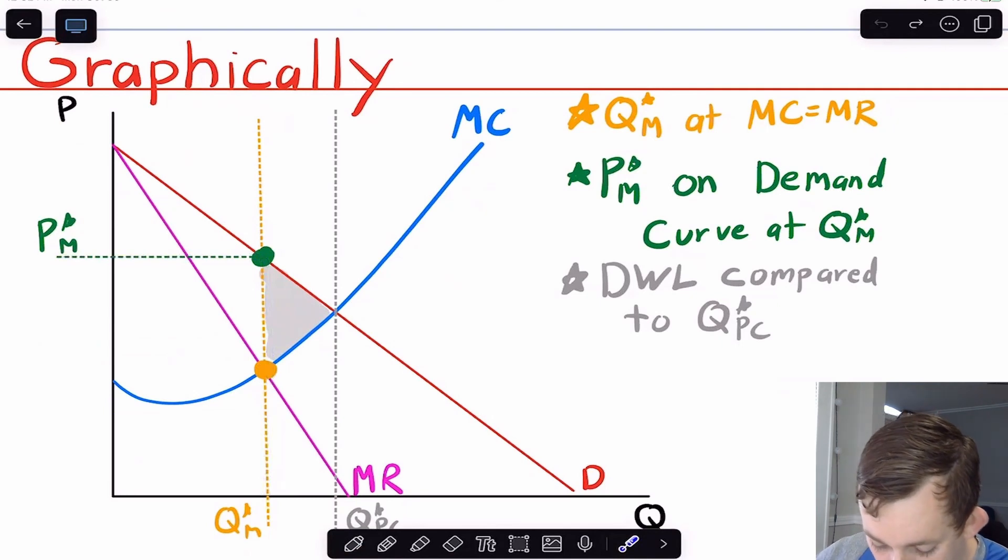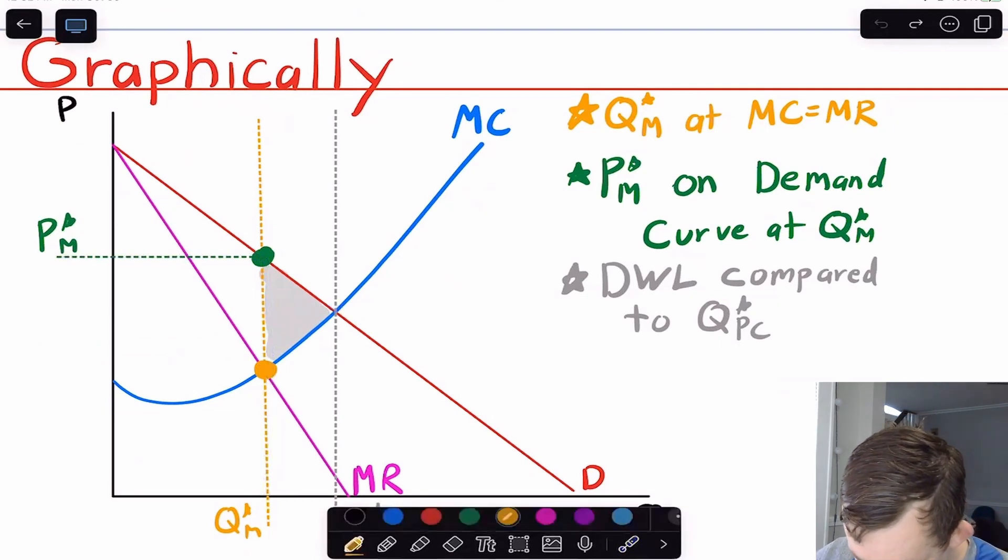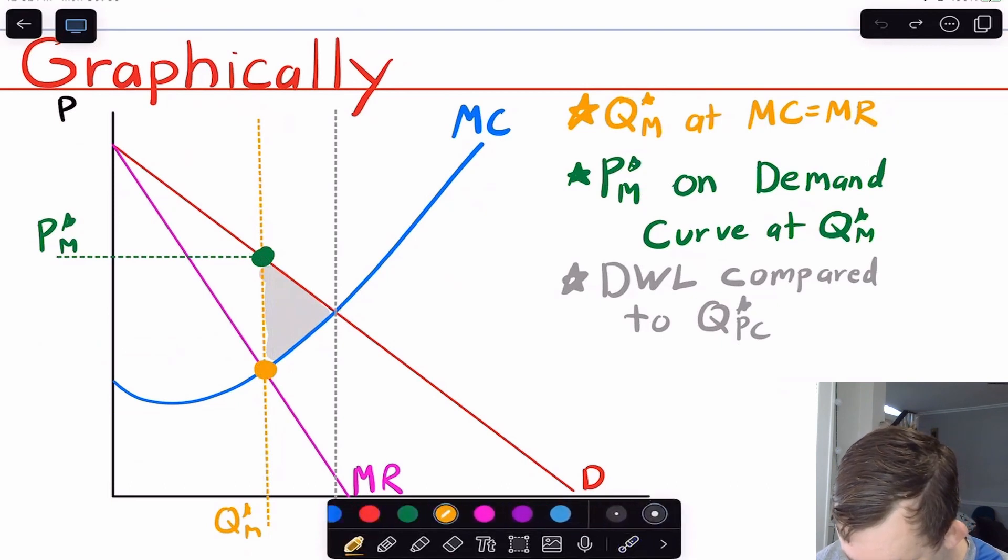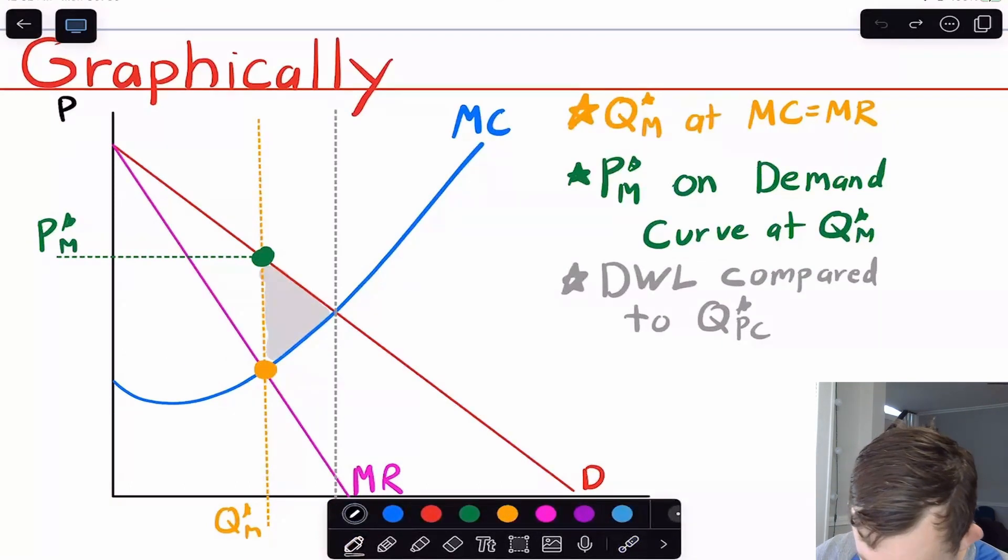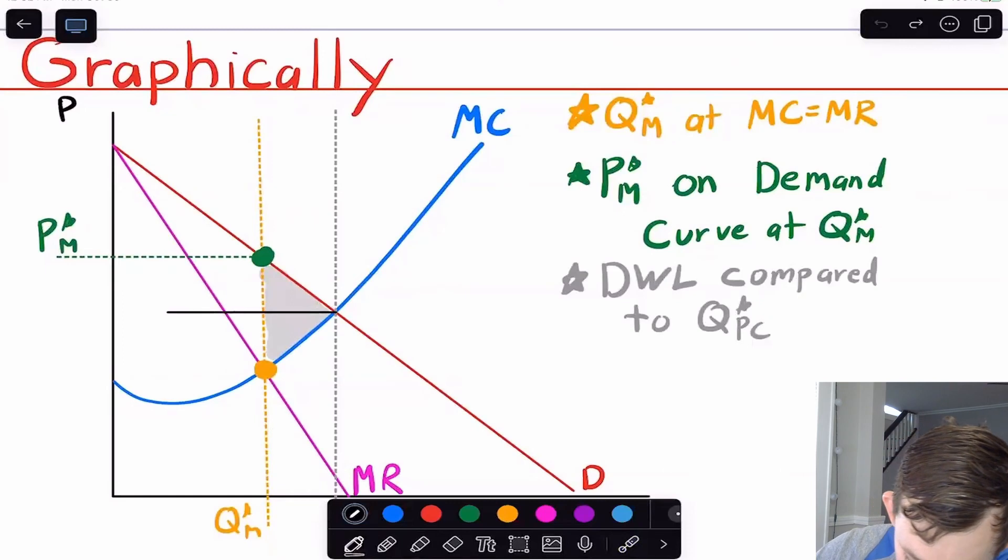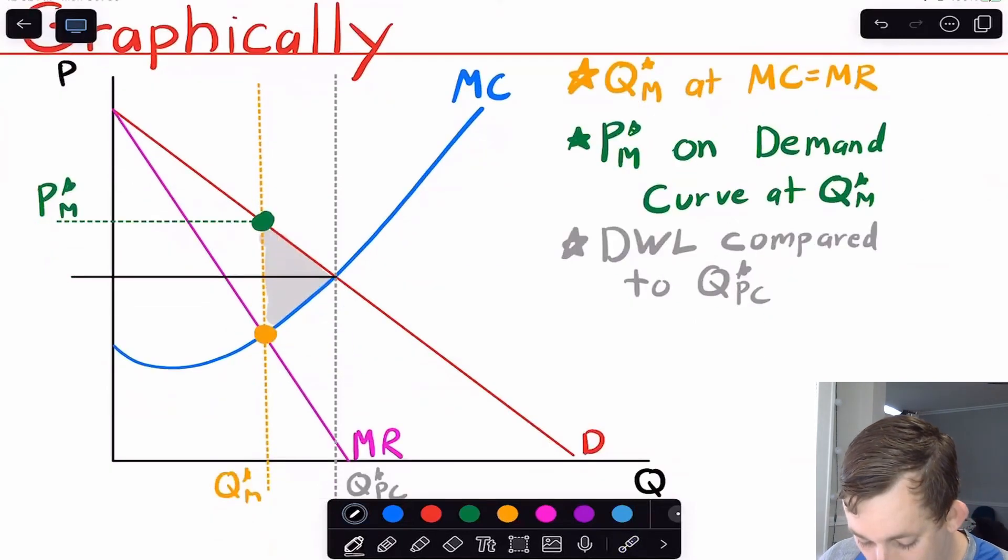So notice that this gray point right here, if I were to add the price, you can see that this monopoly market is going to look something like this, where the price is right here and the quantity is at this gray Q star PC.